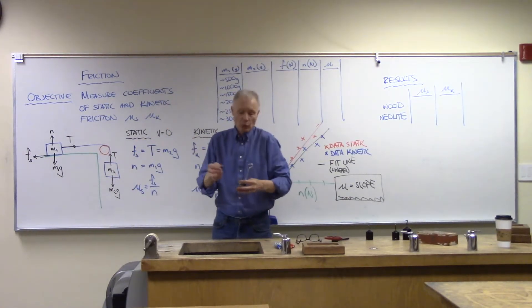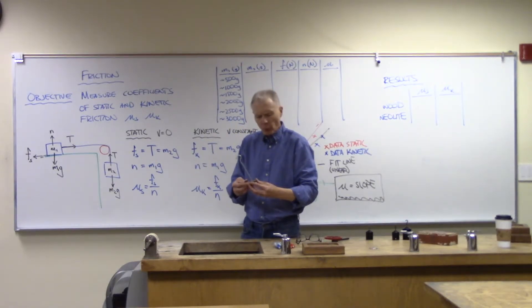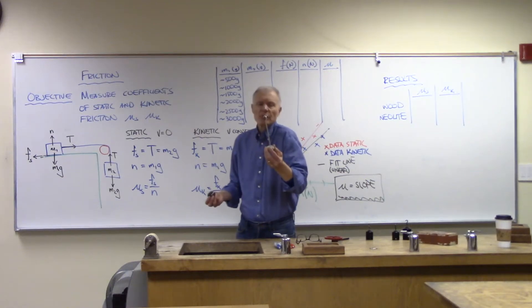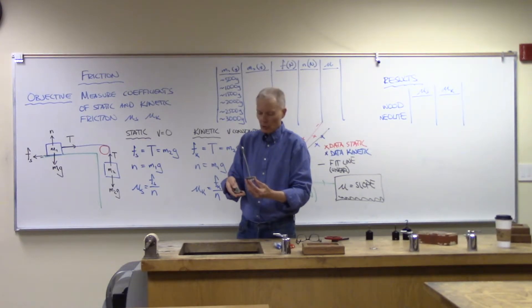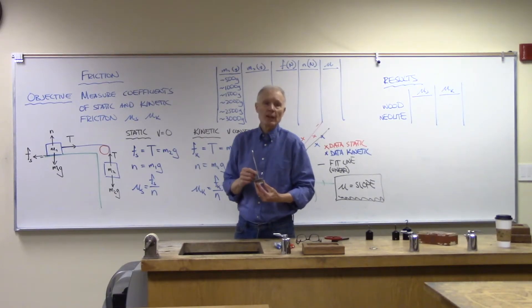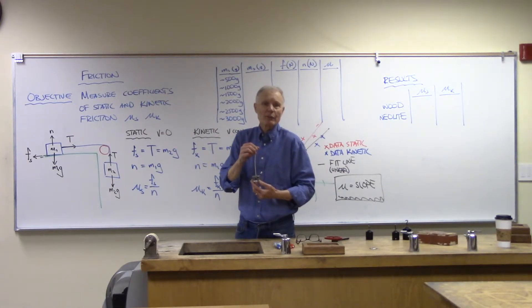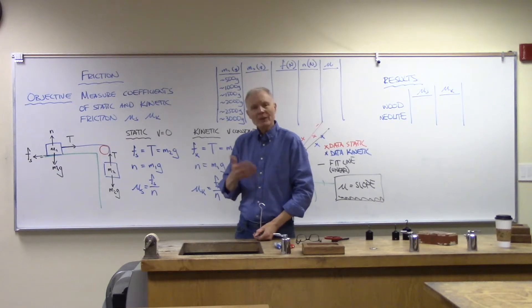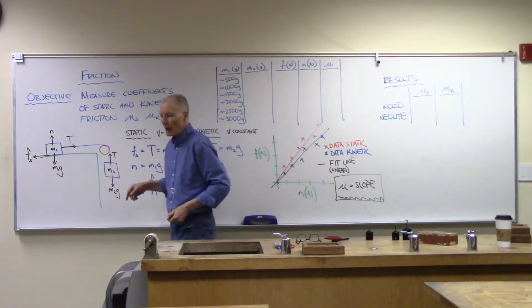When measuring coefficients of static friction, the static frictional force is right at its maximum. We're going to pull a little bit, then pull a little harder, gradually increasing the tension until we get to the breaking point — the point where static friction can no longer offset the tension and the object begins to slide. Right at that point, the static frictional force equals the tension, since velocity is zero. We'll also use a hanger with weights over a pulley, and we can add and subtract weights as needed.